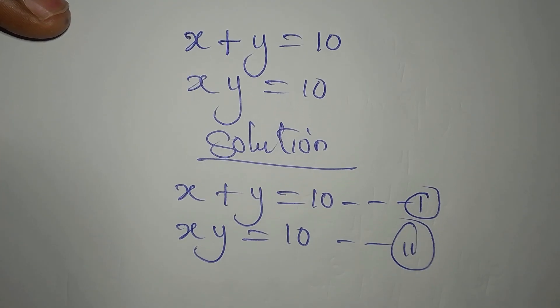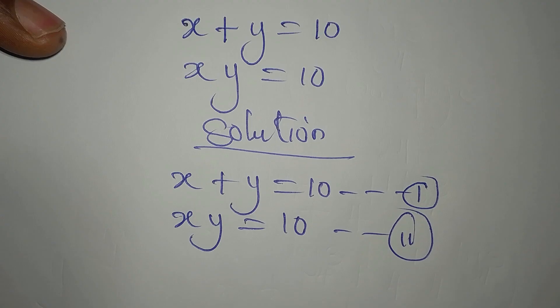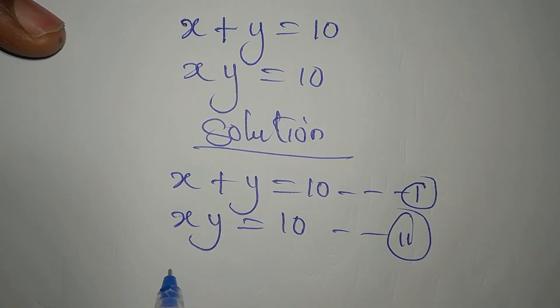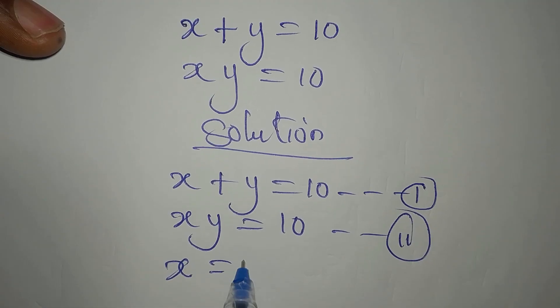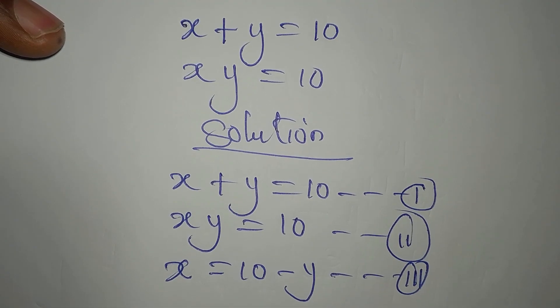Okay, to continue with this, we will be having equation 3 from equation 1. So X is equal to 10 minus Y. This is equation 3 from equation 1.